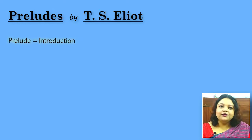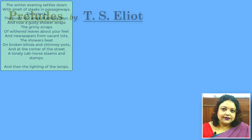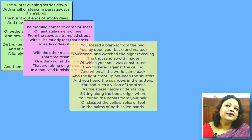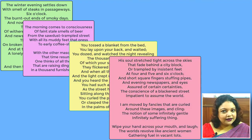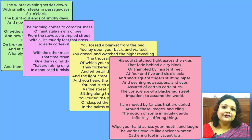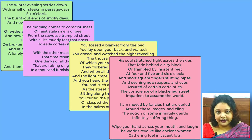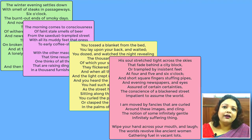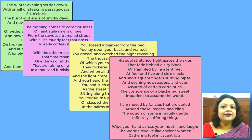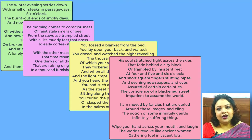Look at the four stanzas as four individual poems, and then as a combination which Eliot wants us to make — a connection which Eliot wants us to make — that all these are so very connected. All these are individual preludes to his understanding of the world.